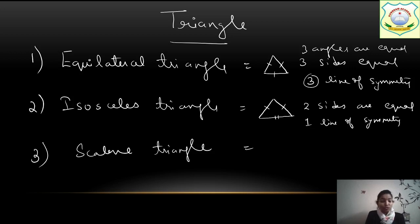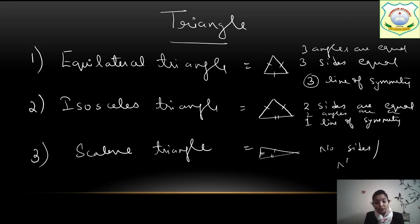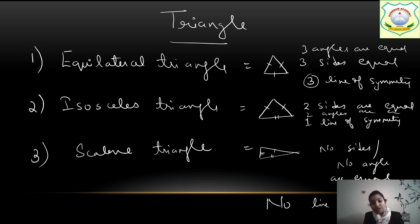And isosceles has 1 line of symmetry. In a scalene triangle, all 3 sides are unequal, so no sides are equal, no angles are equal. So how many lines of symmetry? No line of symmetry. These things we need to write and draw.